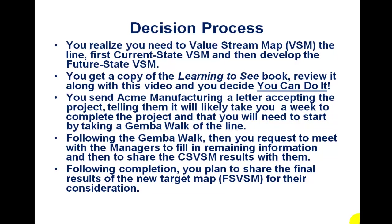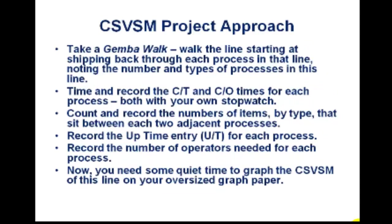So they accept and set it up. You go and take a gemba walk — you walk the line. You want to start at shipping and go back through every process on the line, noting the number and types of processes. While you're there, you take out your stopwatch and record the CT and CO times for each process. C/T is cycle time — the time it takes the operator to complete one item: picks it up, completes it, and moves it to the next station.